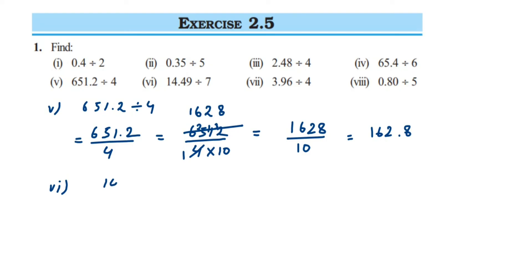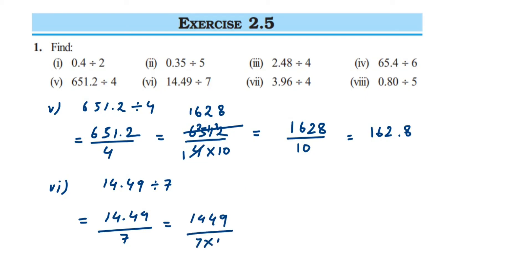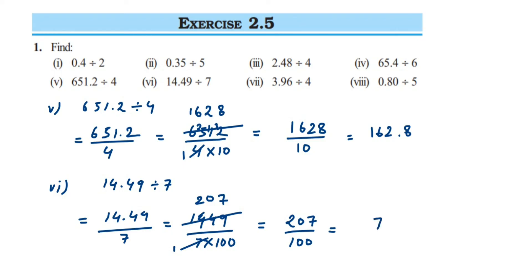Sixth question: 14.49 divided by 7. Remove the decimal — two digits — giving 1449 divided by 7 multiplied by 100. Cancel in 7 table: 7 twos are 14; next digit is 4, smaller than 7, so place 0; take 49 together, 7 sevens are 49. That gives 207 upon 100. Two zeros means decimal two from the right: 2.07 is the answer.